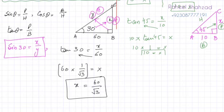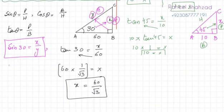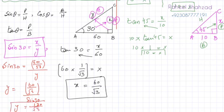Now to find y, we apply sine since we know x. Sine 30 = x / y = (60/√3) / y. Cross-multiplying: y = (60/√3) / sin 30 = (60/√3) / (1/2) = 120/√3. So y = 120/√3. That's how, when two unknowns are given in one question, we can find both x and y step by step.